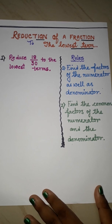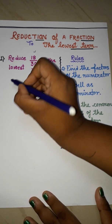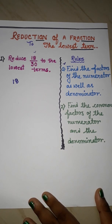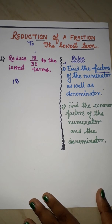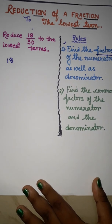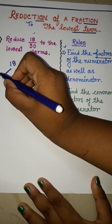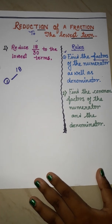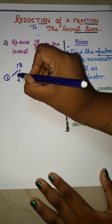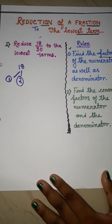In the first question, we have to reduce 18/30 to the lowest term. What is in the numerator? 18. According to the first rule, we have to find out the factors of the numerator. Factors are those numbers by which we can divide 18 and there will be no remainder. If we divide 18 by 1, there will be no remainder, so 1 is a factor of 18.